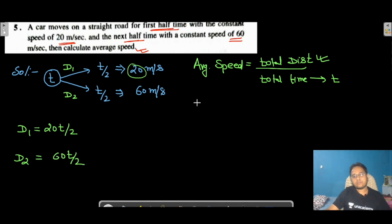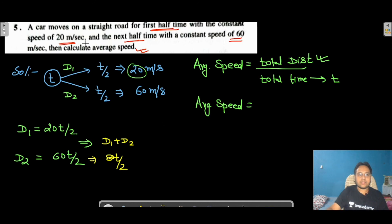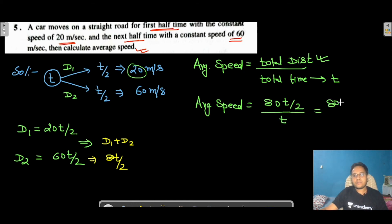Total distance = d1 + d2 = 10T + 30T = 40T. Wait — let's recalculate: d1 = 20 × T/2 = 10T and d2 = 60 × T/2 = 30T, so total = 40T. But the speaker computes (20 + 60) × T/2 = 80T/2 = 40T. Average speed = 40T / T = 40 m/s.